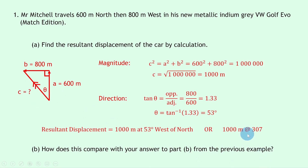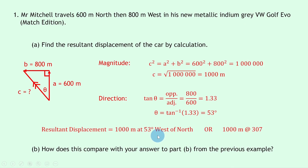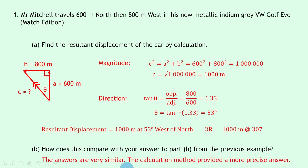Comparing with the scale diagram answer: the directions are the same, but the magnitudes differ slightly — 1010 meters by scale diagram versus 1000 meters by calculation. The answers are very similar; however, the calculation method provided a more precise answer of 1000 meters compared to the 1010 meters found by drawing.